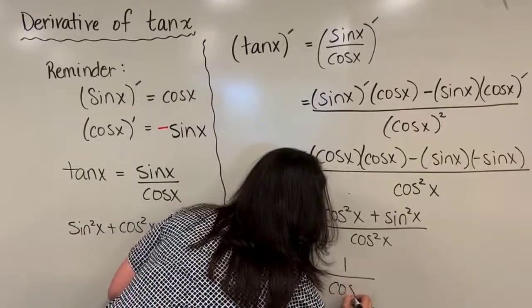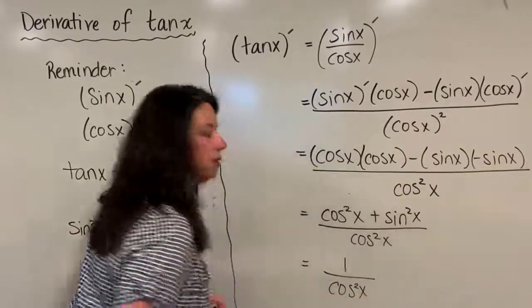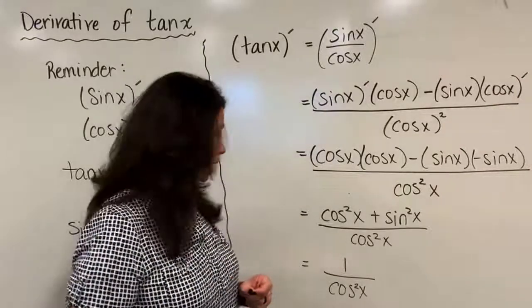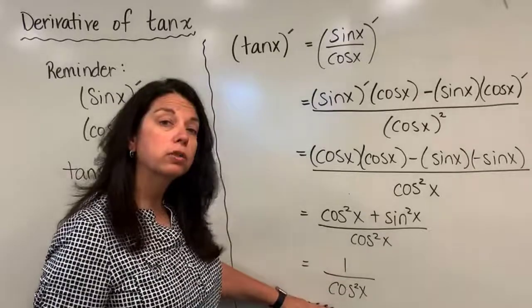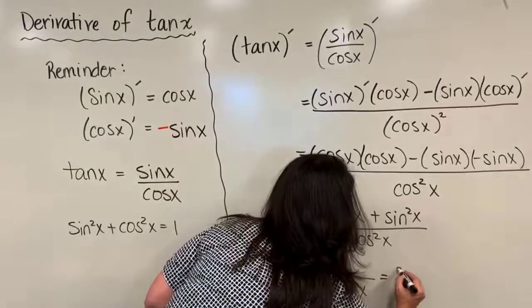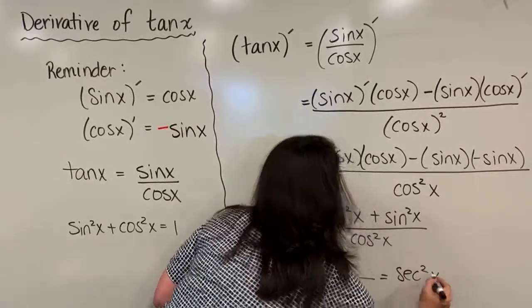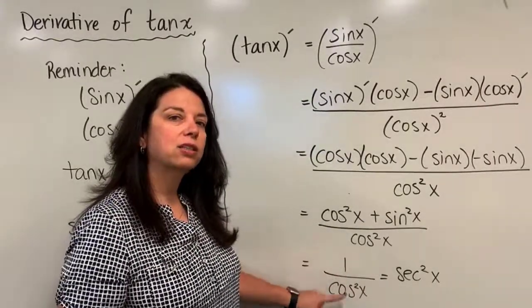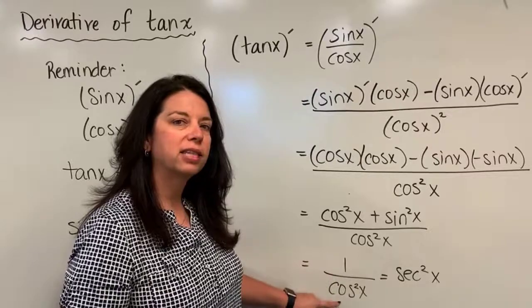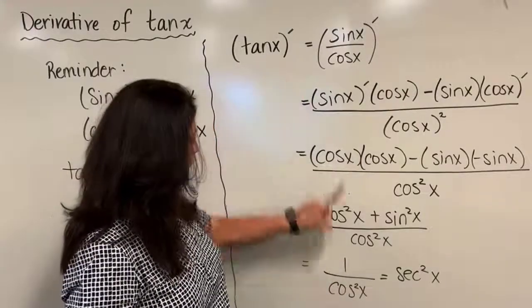You can actually also rewrite one over cosine squared to be secant squared x if you like. But probably more often than not we tend to go the cosine route and write tangent x's derivative as one over cosine squared x.